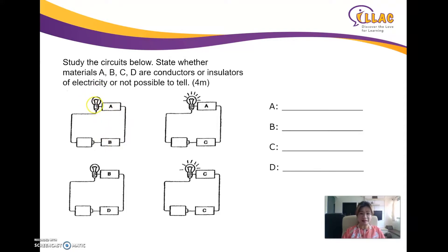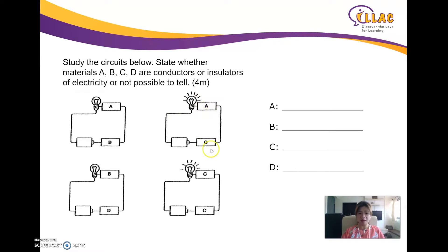Therefore the light did not light up. A and C both allowed the light bulb to light up, which means A and C are both conductors. So if A and C are conductors, and in the A-and-B circuit one is not a conductor — since A is a conductor, B will definitely not be a conductor. So A and C are both conductors.